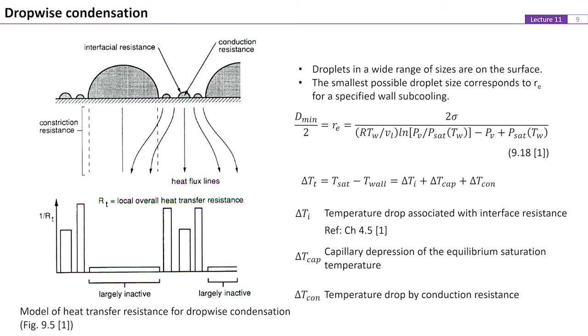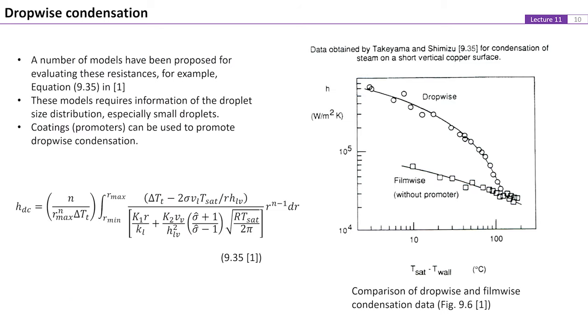The interfacial resistance can be determined from applying kinetic theory analysis as described in chapter 4 of reference 1. The capillary depression on the temperature difference can be determined from equation 18, and applying the Clausius-Clapeyron equation with ideal gas. The temperature drop by conduction resistance can be evaluated by using basic heat conduction theory. With these estimations on the resistance of each droplet, the overall heat transfer coefficient for dropwise condensation can be determined from integration of the contributions from droplets with all sizes on the surface. Equation 35 shows an example of a model in such kind.